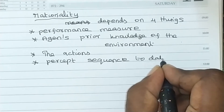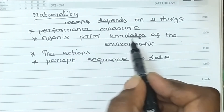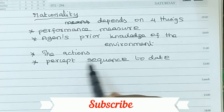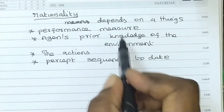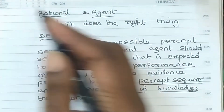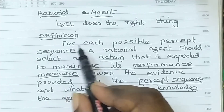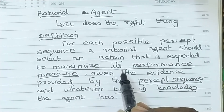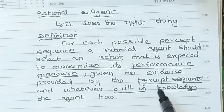So rationality depends on four things: one is performance measure, two is the agent's prior knowledge of the environment, three is the actions that the agent can perform, and four is the percept sequence. We define the rational agent as: for each possible percept sequence, a rational agent should select an action that is expected to maximize its performance measure, given the evidence provided by the percept sequence and whatever built-in knowledge the agent has.